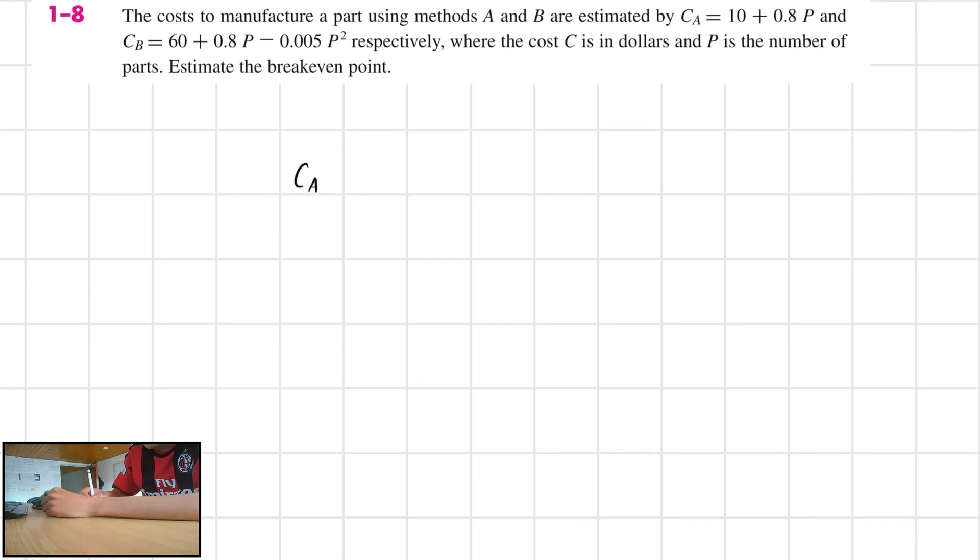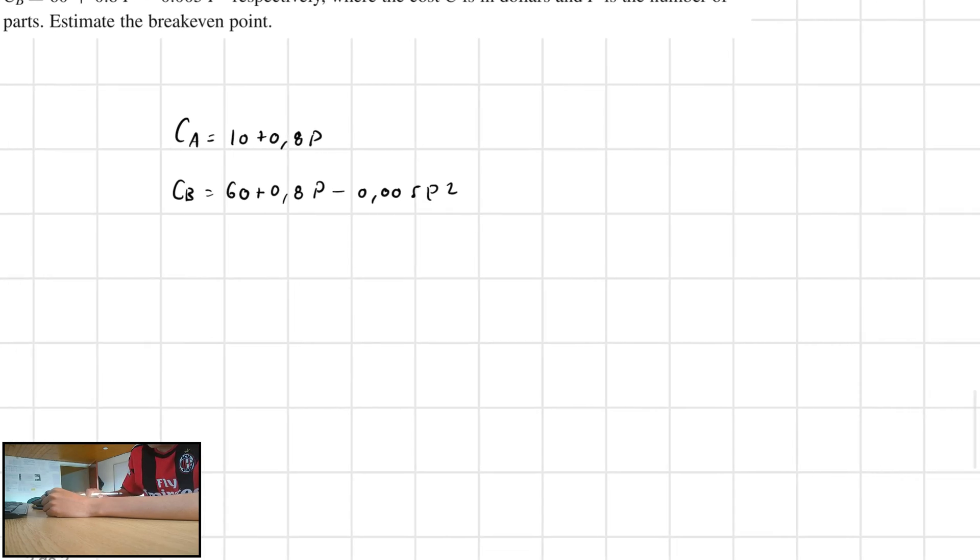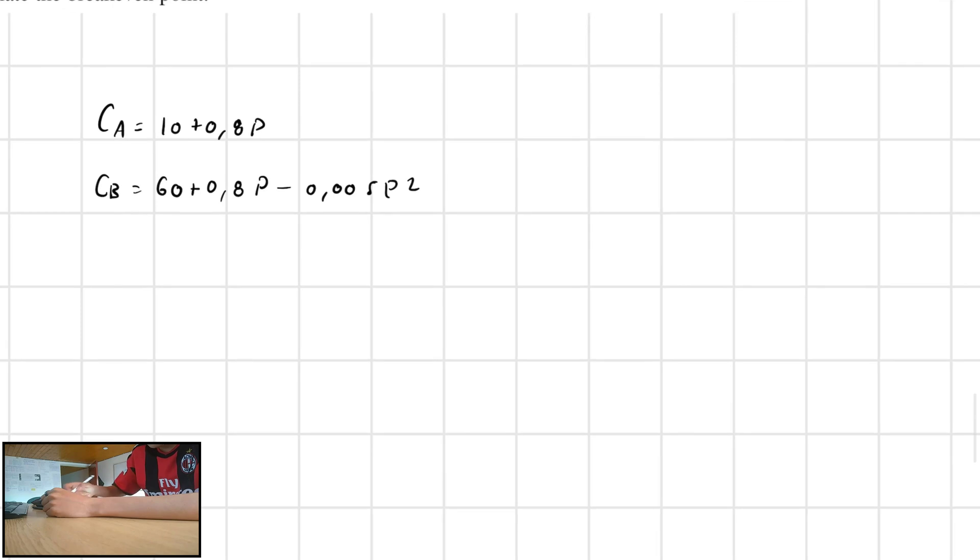Now, CA is equal to 10 plus 0.8P, and CB is going to be equal to 60 plus 0.8P minus 0.005P squared. So, as I said, all we have to do is to create an equivalence. 10 plus 0.8P is going to be equal to 60 plus 0.8P minus 0.005P squared.